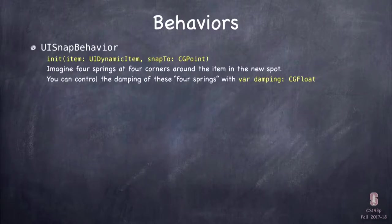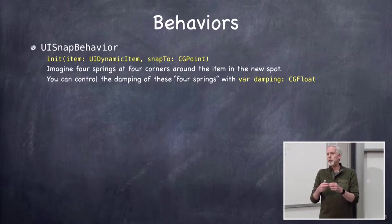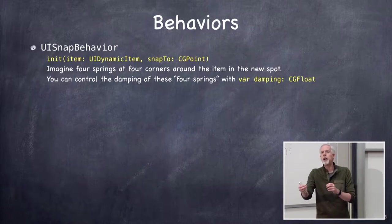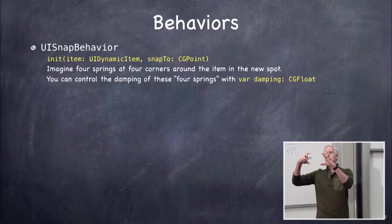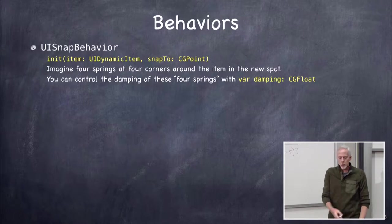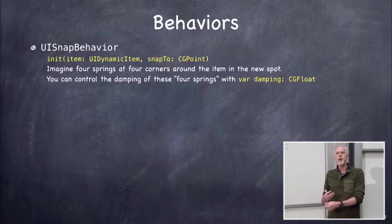Snap behavior is how you move something when using the dynamic animation system. You say snap to this point, and unlike view property animation, when it snaps there it doesn't just ease in — it actually arrives and vibrates a little, as if there are four springs on the corners. It feels more natural. You'll probably use snap in your homework to throw matched cards into the discard pile.